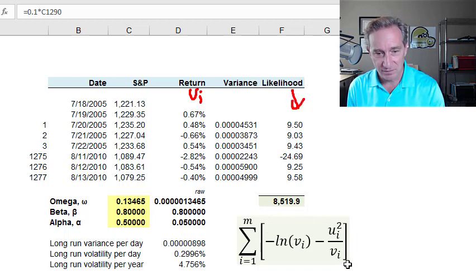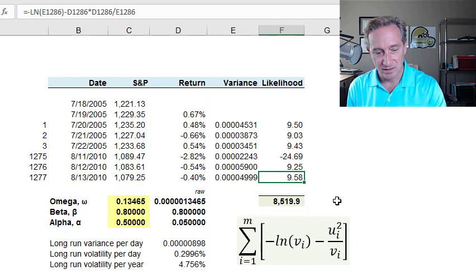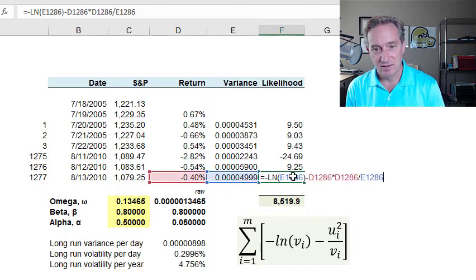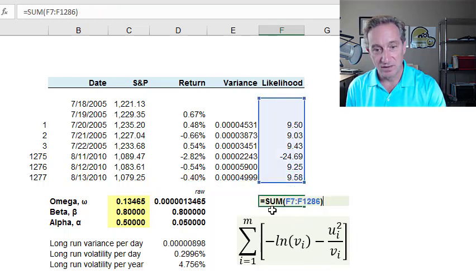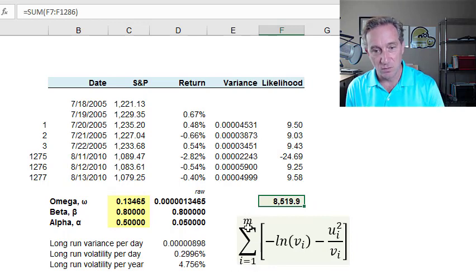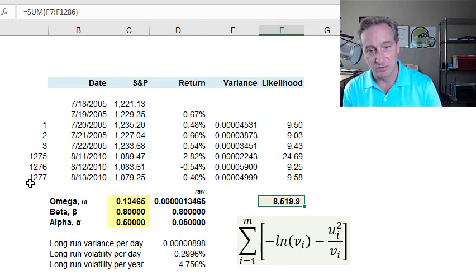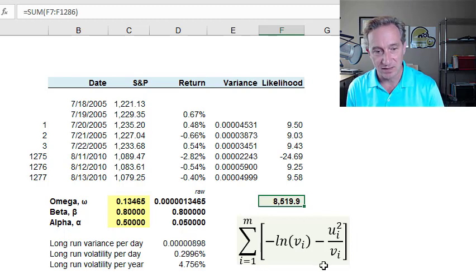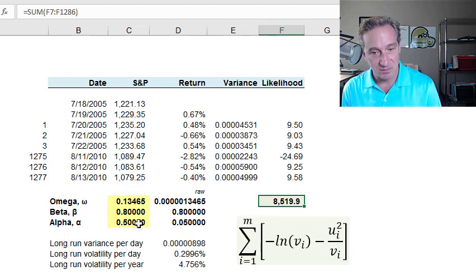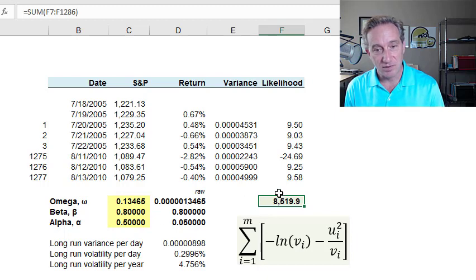So we end up here with a fairly convenient maximum or likelihood estimation formula. And that's this column right here. So this formula is implemented in each of these cells. And the summation here is right here. So the sum here is sigma over one through m days. In this case, 1,277 days is given right here. And the maximum likelihood estimation approach tells us that the best fit parameters under these assumptions are the parameters that maximize this value.